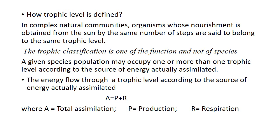For example, if a human being is eating grains, they are a primary consumer at the second trophic level. But if you are eating cow, then you are at the third trophic level and are the secondary consumer. So the trophic level changes in different cases of the same animal. The trophic classification is one of function and not of species; a given species population may occupy one or more than one trophic level according to the source of energy actually assimilated.